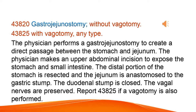Gastrojejunostomy — without vagotomy; with vagotomy, any type. The physician performs a gastrojejunostomy to create a direct passage between the stomach and jejunum. The physician makes an upper abdominal incision to expose the stomach and small intestine. The distal portion of the stomach is resected and the jejunum is anastomosed to the gastric stump. The duodenal stump is closed and the vagal nerves are preserved. Report 43,825 if a vagotomy is also performed.